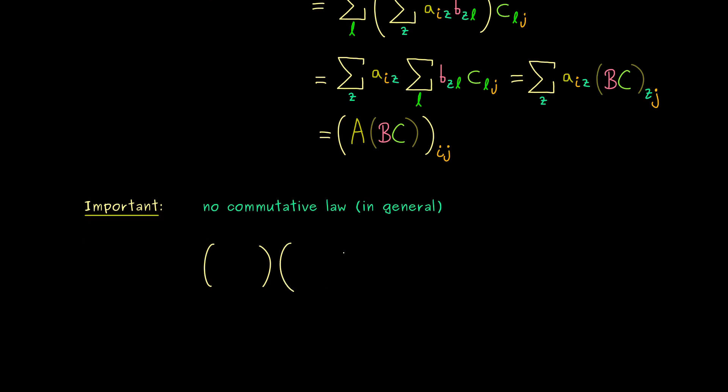Therefore, I would say, let's look at a 2 times 2 example. So we multiply the matrix with 0, 1, minus 1, 0 as entries with the matrix that has only 1s as entries.